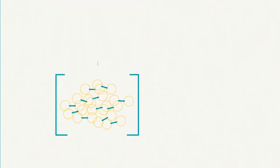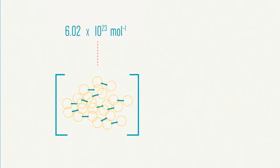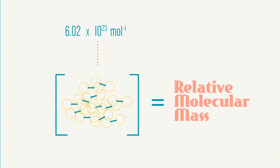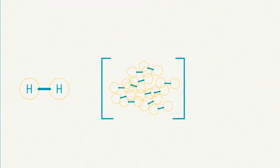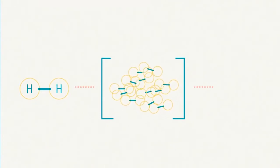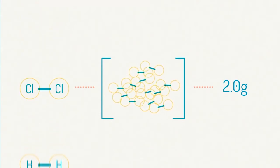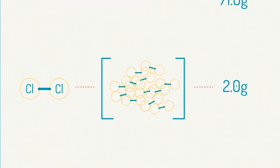For molecules, the mass of Avogadro's number of particles is equal to their relative molecular mass in grams. So, for example, the mass of Avogadro's number of hydrogen molecules, or H2, is 2 grams, and the mass of Avogadro's number of chlorine molecules, Cl2, is 71 grams.